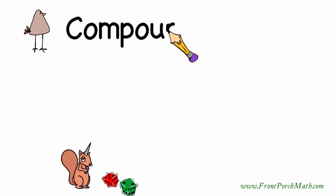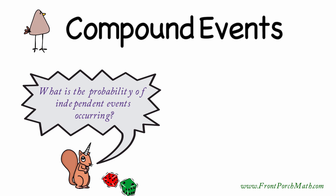In this video, we're going to be looking at compound events. Compound events are when two or more independent events happen together, and then we want to find the probability of that event actually happening.